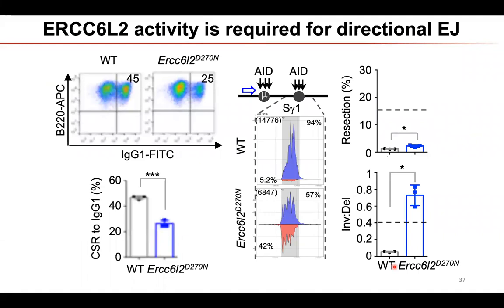We generated catalytic dead mutant mice — this mutant has an ATP or ATPase/helicase activity, but no one had purified this protein before. When we looked at class switch recombination in the catalytic dead mutant, similar to complete knockout, it shows compromised class switch recombination, with directional joining completely lost — giving a one-to-one ratio of deletion and inversion events. So the protein's function depends on its catalytic activity.